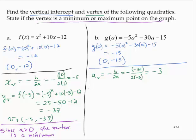So then the y-coordinate, well, it's not really a y-coordinate. It's the g-coordinate, OK? But we call it the y-coordinate of the vertex still. That would be g of negative 3, which would be negative 5 by negative 3 squared minus 30 by negative 3 minus 15.